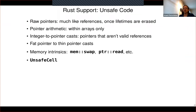Concretely, we support raw pointers — they're basically like references but with no lifetimes, and we already ignore lifetimes. We support pointer arithmetic within arrays only, since that's all you need for most Vec and Slice operations. We support integer-to-pointer casts to create pointers that aren't valid as references — used for Box, Vec, and Slice when constructing a dummy value for a zero-length allocation. We support fat-pointer-to-thin-pointer casts, some low-level memory intrinsics like swap, pointer read, and replace, and we support unsafe cell, which underlies RefCell, Cell, and similar.